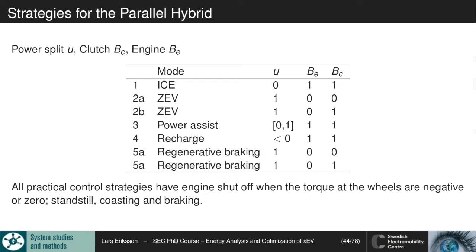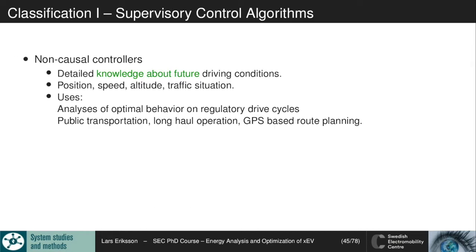In the power split controls we have different modes: internal combustion engine running, zero emission vehicle where we decouple the engine, power assist mode, recharge mode, and regenerative braking where we take all the energy into the battery. The goal now is to develop control structures that determine which of these modes to operate in. We can classify controllers as non-causal controllers that have information about the future and detailed knowledge of the driving situation — like those with given driving cycles — to test what-if questions about the best we can do with all information.